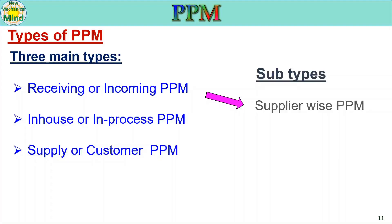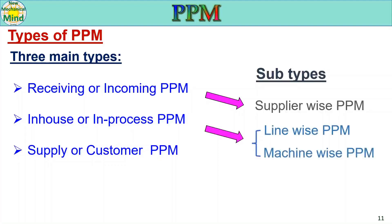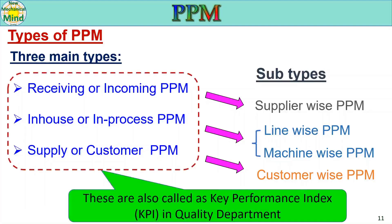If PPM is calculated supplier-wise individually, it is called supplier-wise PPM. For in-house or in-process PPM, the subtypes are line-wise PPM and machine-wise PPM. If PPM is calculated for the entire rejection quantity of the company, it is in-house PPM. If calculated for an assembly line, it is line-wise PPM. If calculated machine-wise within each assembly line, it is machine-wise PPM. For supply or customer PPM, the subtype is customer-wise PPM, calculated for individual customers.